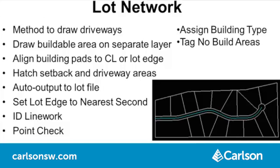Set Lot Edge to Nearest Second is a new command to adjust the drawing line work to remove decimal seconds. ID Line Work is a new command to pick drawing line work and report the type of network element, like lot edge or right-of-way. Point Check is a new command to snap together lot network points within a tolerance. Assign Building Types is a new command to switch the building type within selected lots. Tag No Build is a new command to define areas to avoid for building placement.